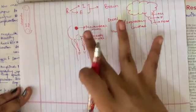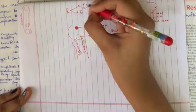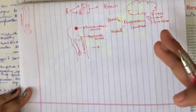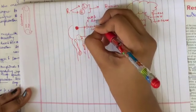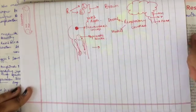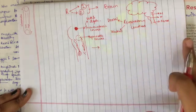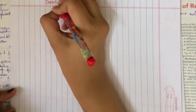The dorsal respiratory group controls inspiration. The ventral respiratory group mainly controls expiration, but it can also control inspiration. The pneumotaxic center controls the rate and depth of inspiration. This is the neural control of respiration. There is something even more interesting — chemical control of respiration — which I might cover in my next video, so let me know if you want that.